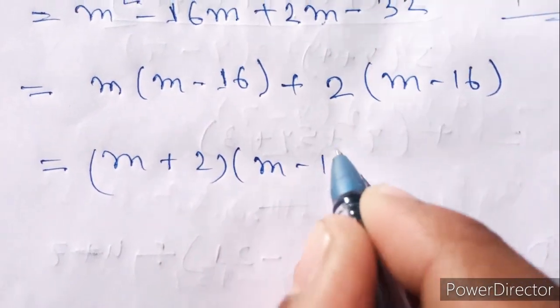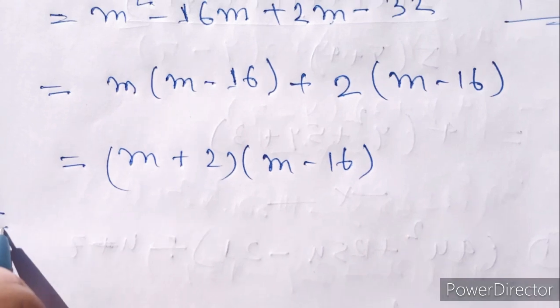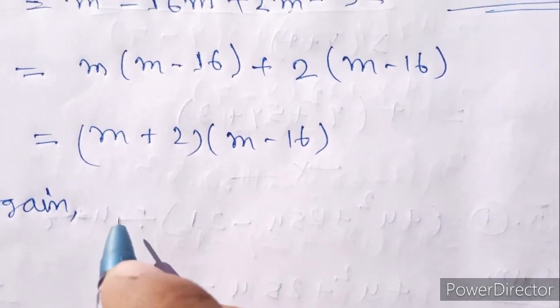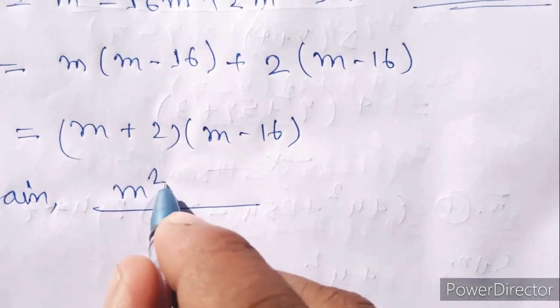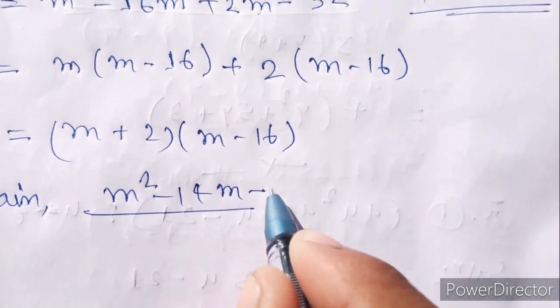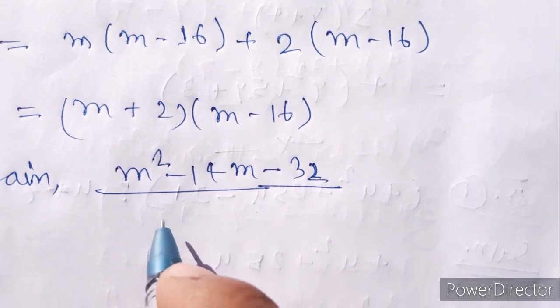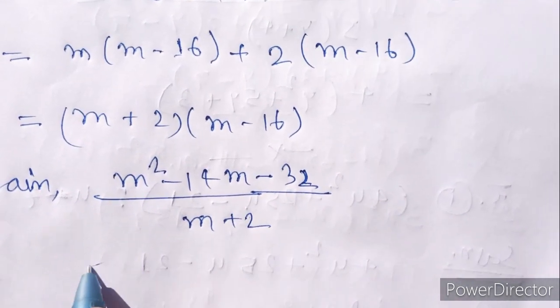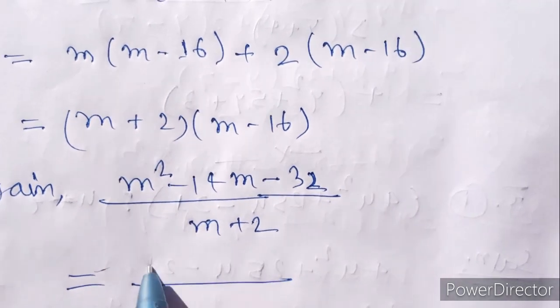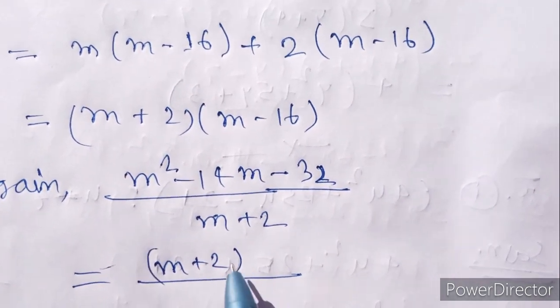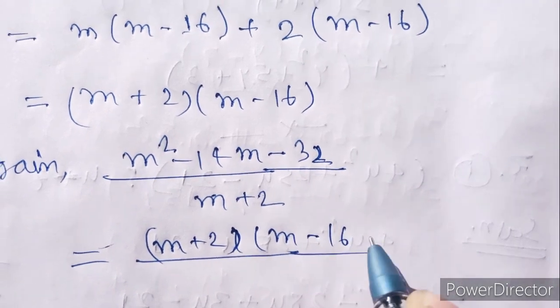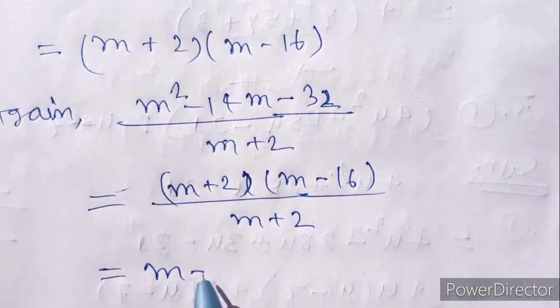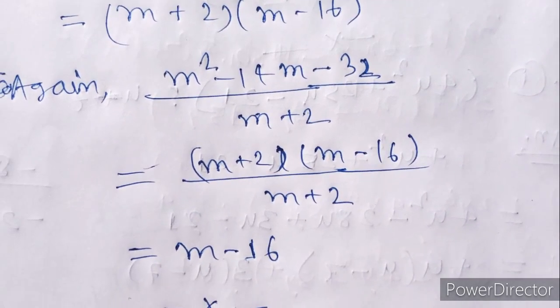So it's equal: m² minus 14m minus 32 by m plus 2. Factoring, we get m plus 2, m minus 16. So m plus 2 cancels, giving m minus 16. Thank you.